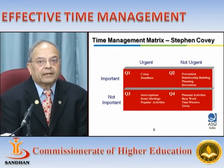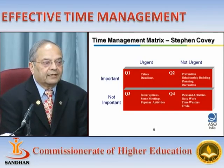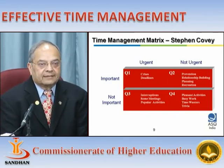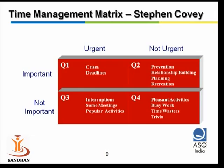In quadrant four, these are the pleasant activities — chatting around, sending messages on WhatsApp, busy work — we are wasting time and focusing on trivial things like sending email messages with a lot of jokes. That is not adding any value. And in quadrant three, we should not be in that space at all — avoid the interruptions.